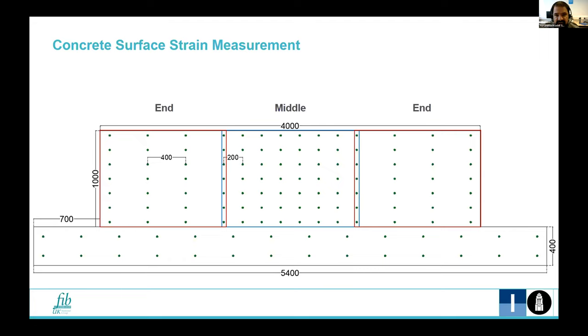The wall for the purpose of this measurement is divided into three portions as you can see on the slide. The middle part is with finer grid and the outer parts are with coarser grid. The purpose of dividing the wall into these two parts is one to economize on the time required for strain measurements.